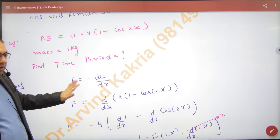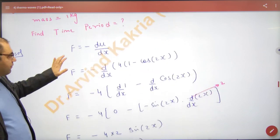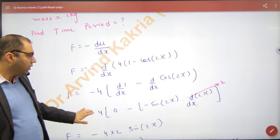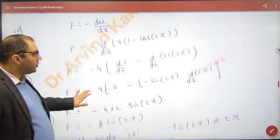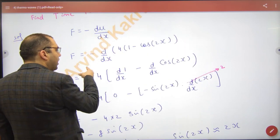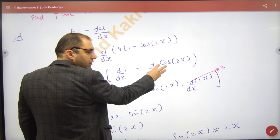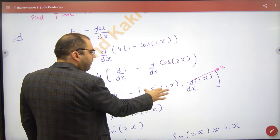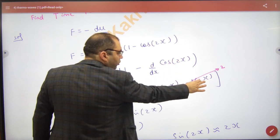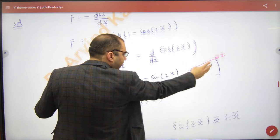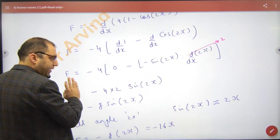F equals minus dU by dx. First of all, put the energy here and differentiate it. Differentiation of the first term - fourth term and second term. Cos(2x)'s differentiation is minus sin(2x) times d/dx of 2x. 2 comes out, dx/dx is 1. Minus, minus and minus - what will happen? Minus.